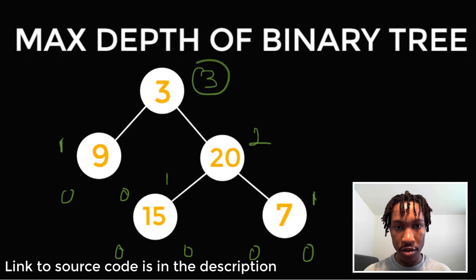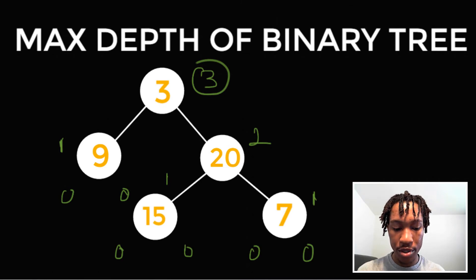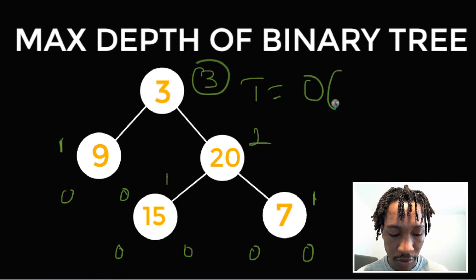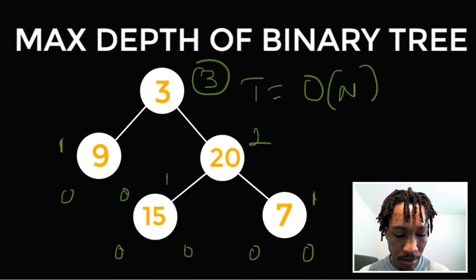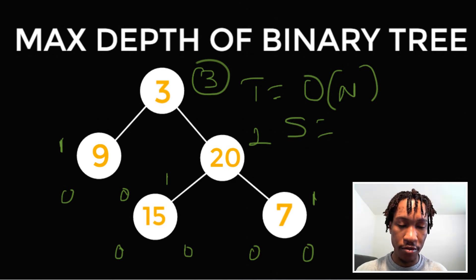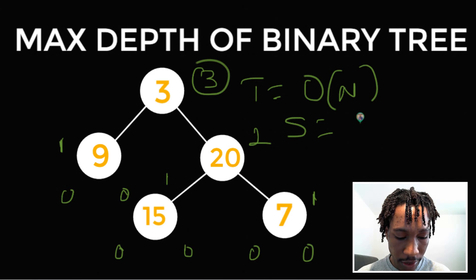That's how you solve this question — it's quite similar to the binary tree diameter question. For time complexity, we're going through all the nodes in the binary tree, so that's O(n) time, where n is the number of nodes. For space complexity, we're using depth-first search to go as deep as the deepest node, so it's O(d) space — we'll have at most d frames on the call stack.